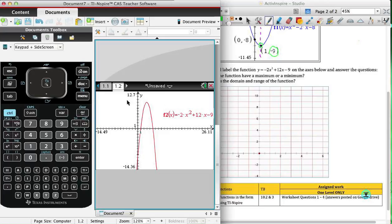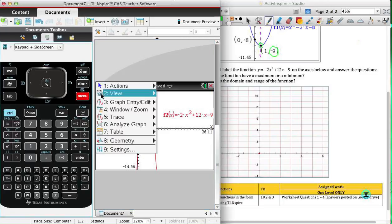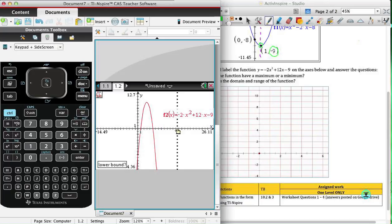Once again, menu, I want to use analyze graph. In this case I'm looking for a maximum value because the graph opens down. Go to the left, point to the right, and there we have our maximum value of 39.